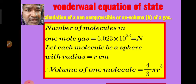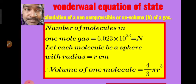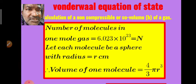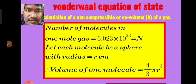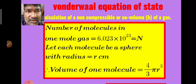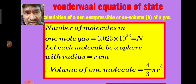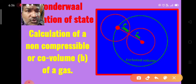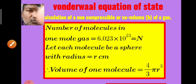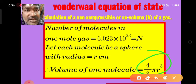We need to know the relation between the excluded volume and the actual volume of gas molecules. One mole of any gas contains Avogadro's number of molecules — 6.023 × 10²³. If the radius of one molecular sphere is r centimeters, then the volume of one molecule is calculated by the equation 4/3 πr³, which is the formula for the volume of a sphere.